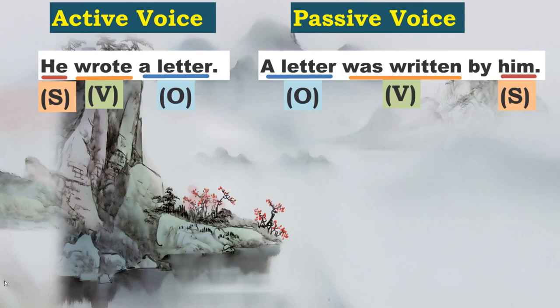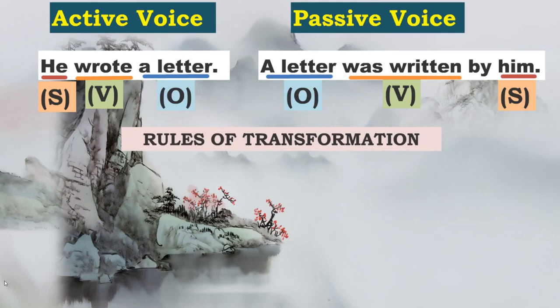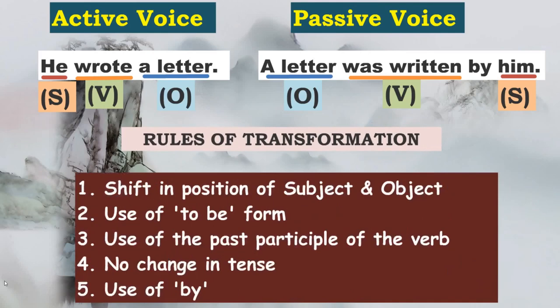Here, past participles are used in the transformation to passive voice. Let us summarize the rules of transformation. First, there is a shift in position of the subject and the object. Second, there is the use of the 'to be' form. Third, there is the use of the past participle — always the past participle of the verb is used. Fourth, there is no change in the tense, because the tense is reflected in the 'to be' form. If it is 'wrote,' it is 'was.' If it is 'writes,' it would be 'is written.' And fifth, there is the use of the word 'by.'